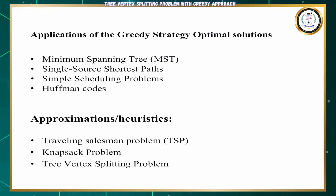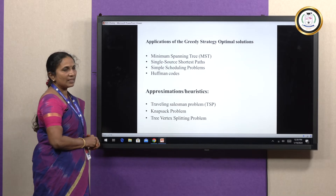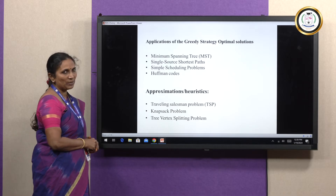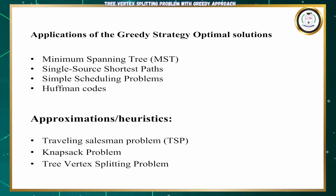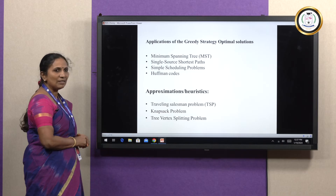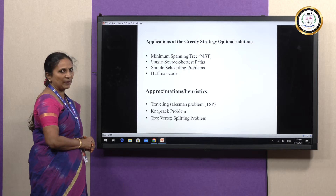Now we will see the various applications of this greedy strategy for optimal solutions. The first one is minimal spanning tree, then single source shortest path problem, simple scheduling problem, and Huffman coding. Similarly, the various approximations are: traveling salesperson problem, knapsack problem, and tree vertex splitting problem. In this video, we are going to see about the tree vertex splitting problem.